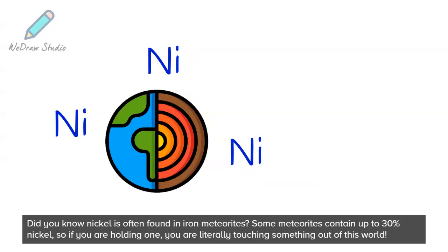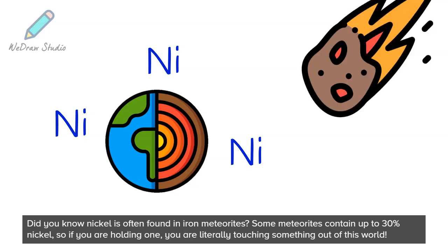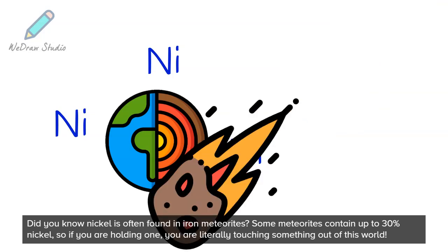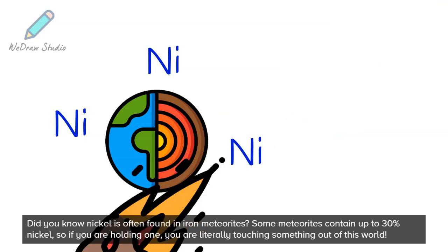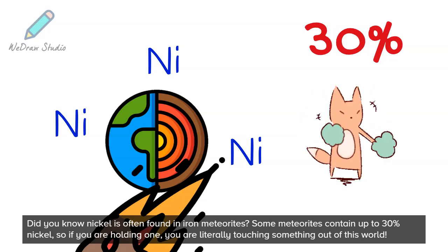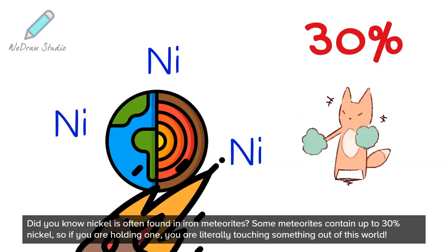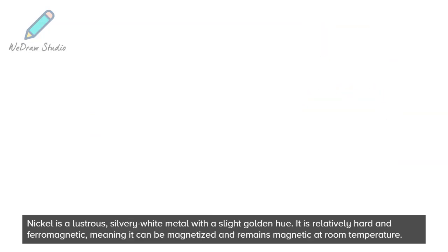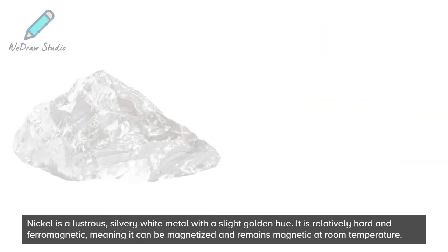Did you know nickel is often found in iron meteorites? Some meteorites contain up to 30% nickel, so if you are holding one, you are literally touching something out of this world.